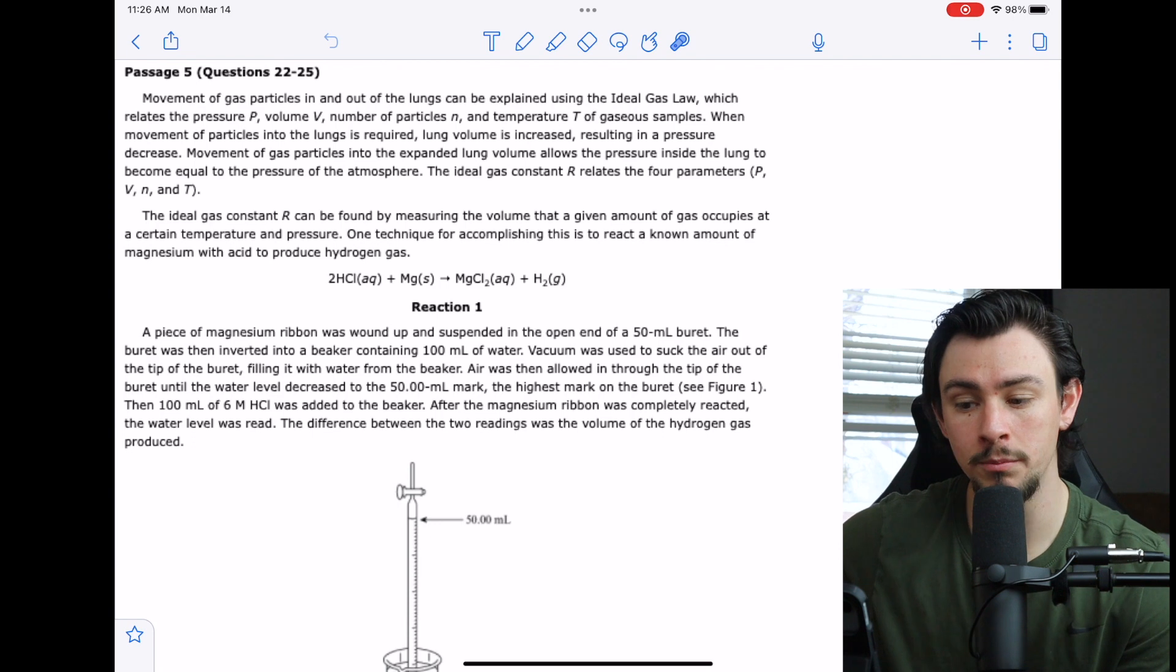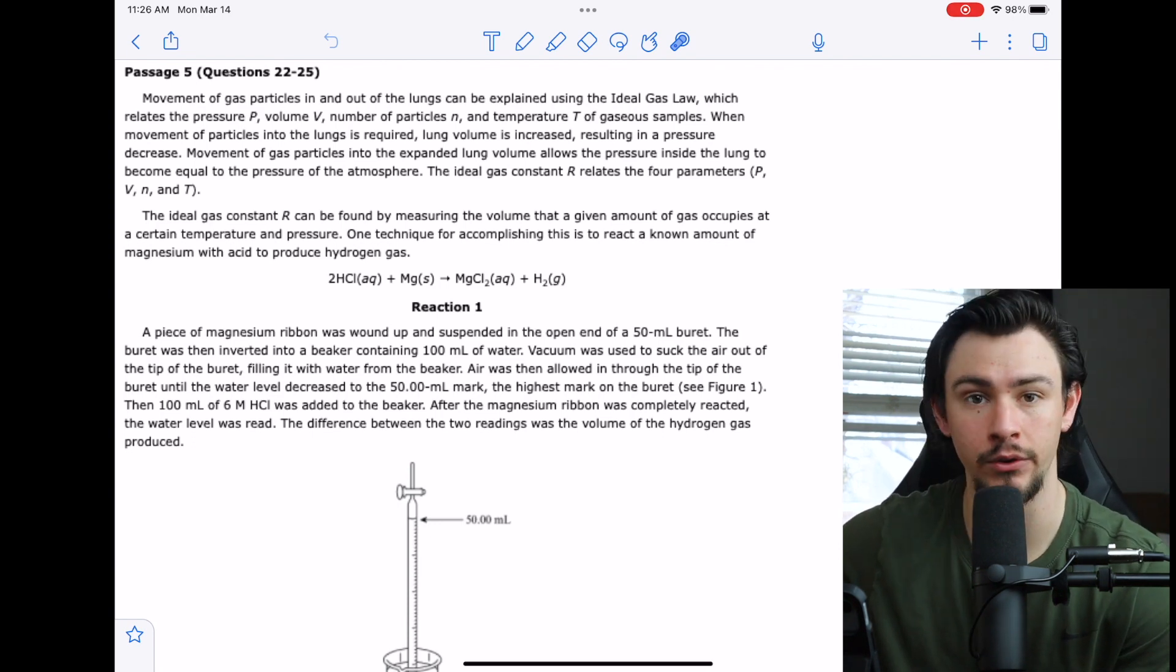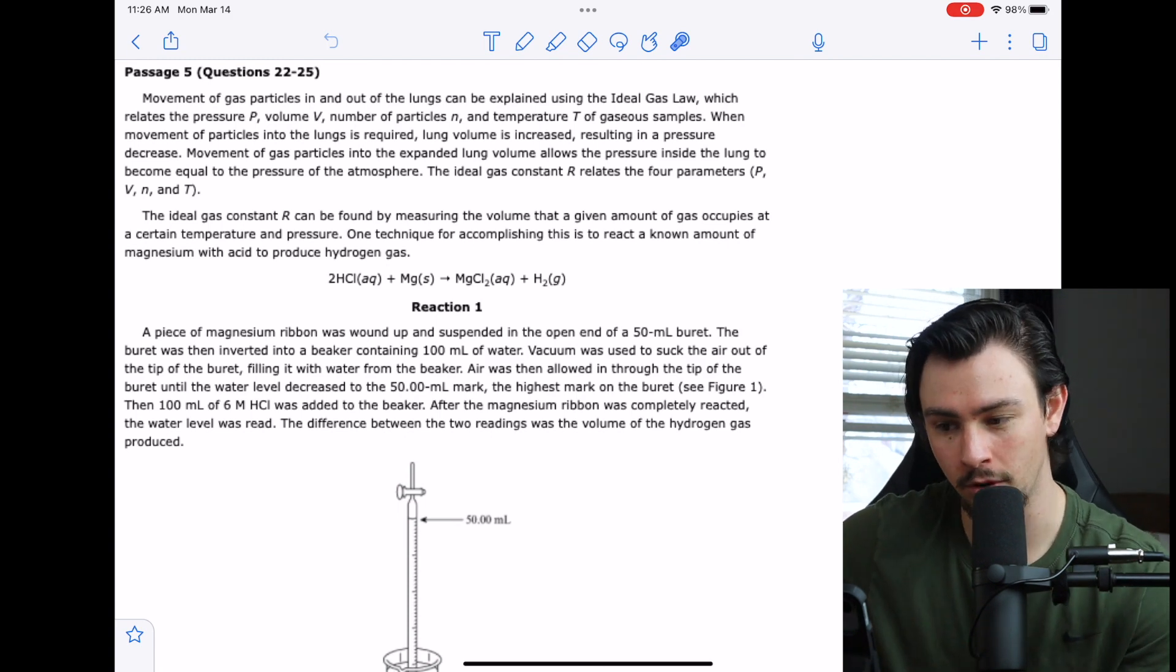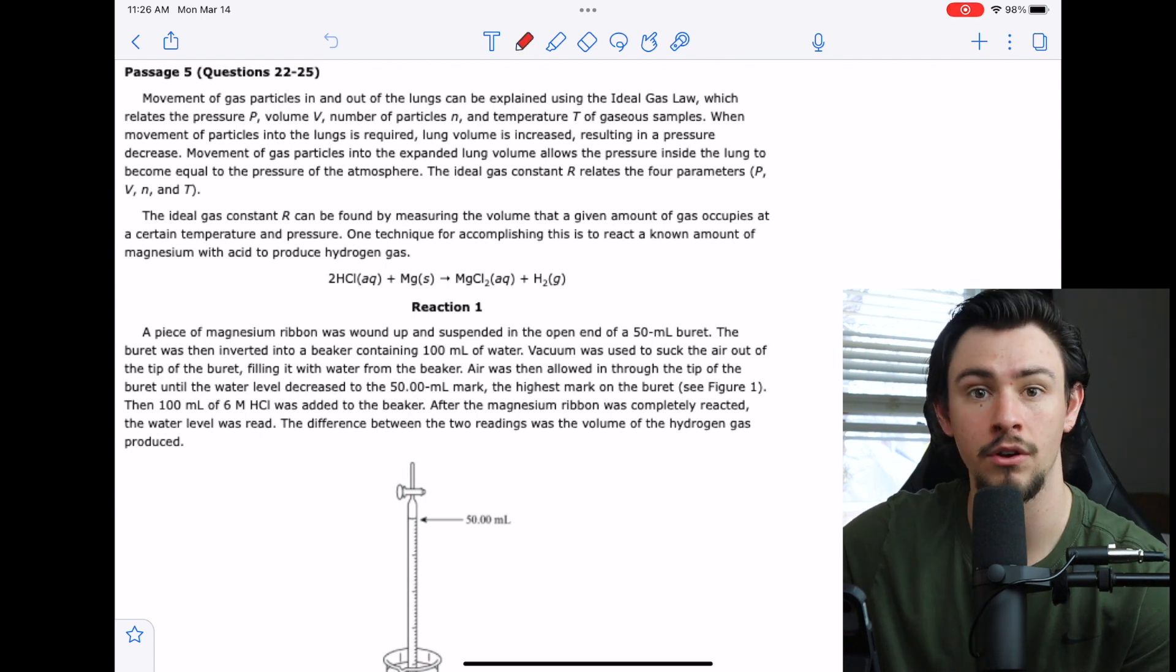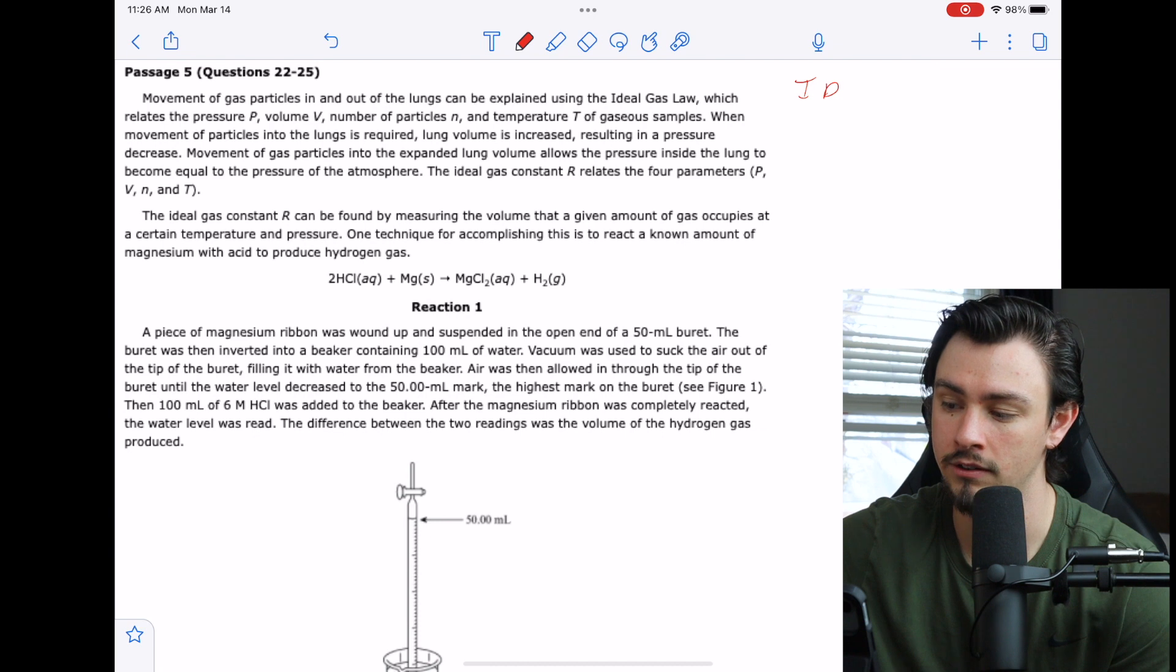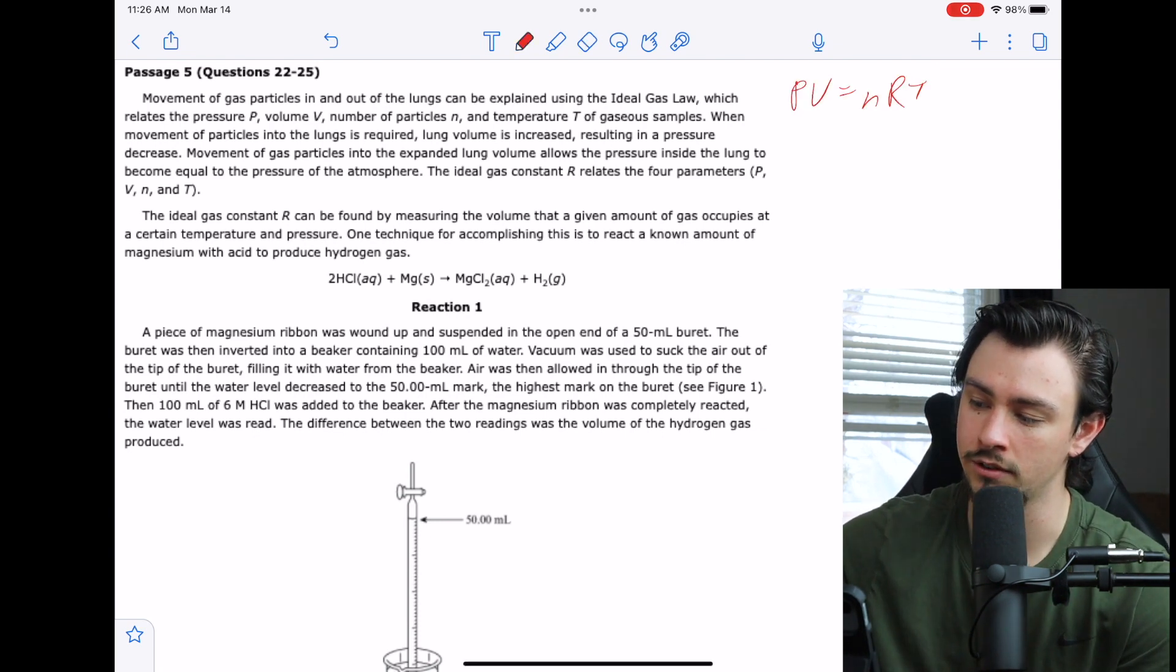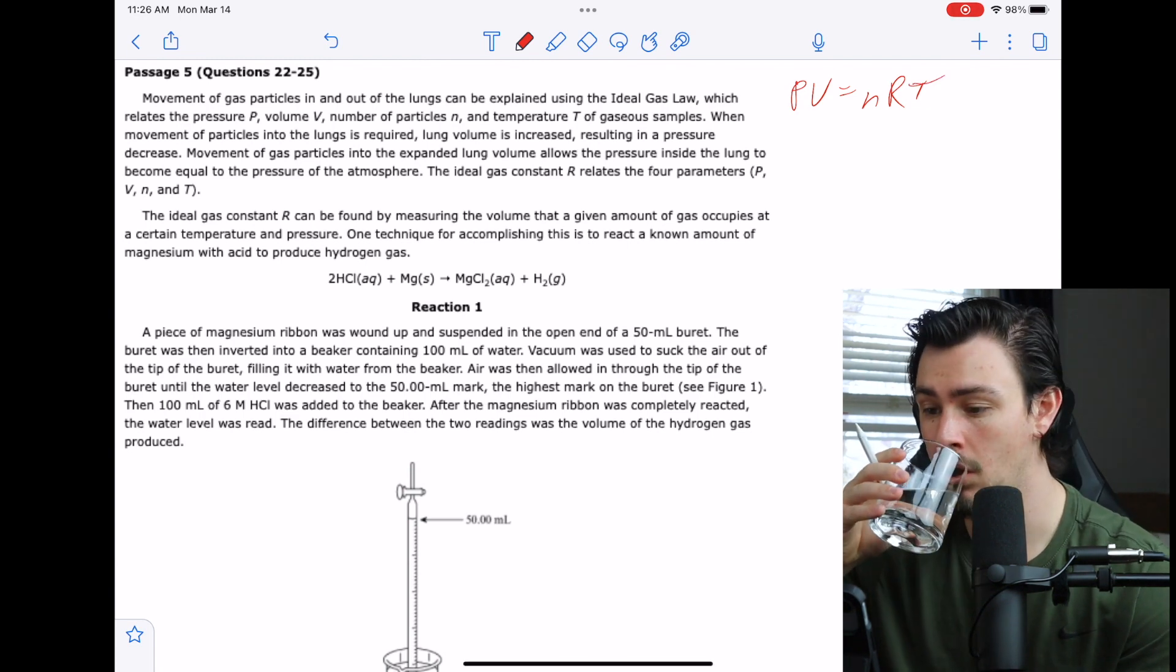Starting off, it says the movement of gas particles in and out of the lungs can be explained using the ideal gas law, I told you, which relates the pressure, volume, number of particles, and temperature of gaseous samples. So obviously one of the basic sciences that we're paying attention to here is going to be the ideal gas law. Instead of actually writing that out, I'm just going to write out the formula: PV equals NRT. So that relates all those variables as well.